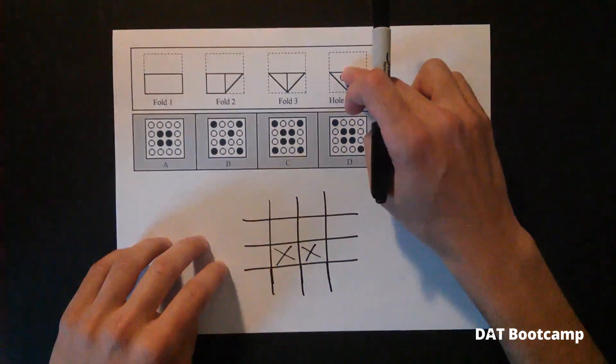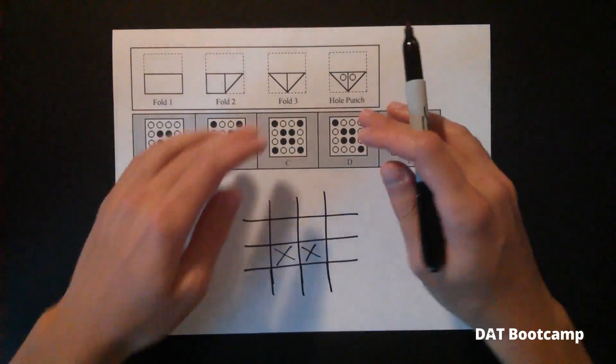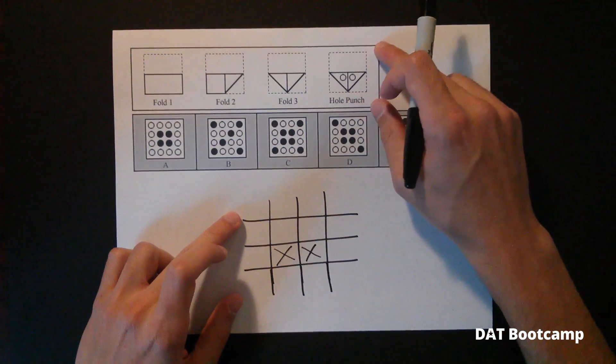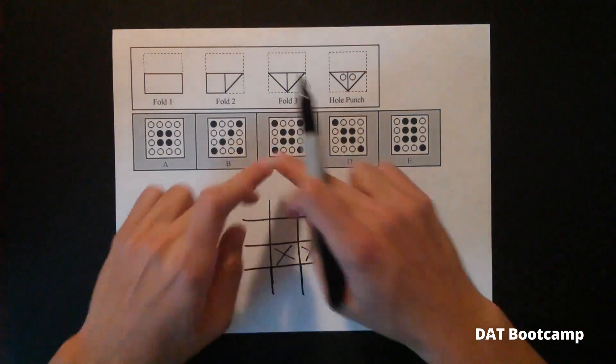This way, you're not trying to keep track of the holes throughout three folds and then try to match it up to these answer choices. You just concentrate on making your grid for the answer problem, breaking it down. And then you match your grid up to one of the answer choices.